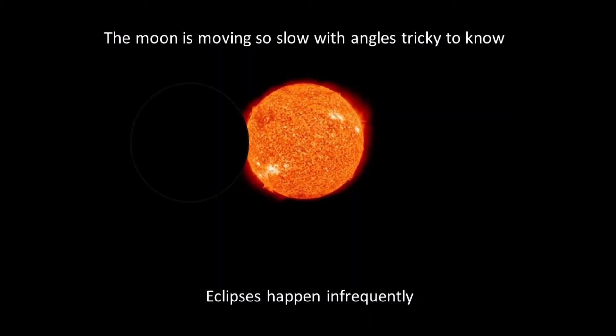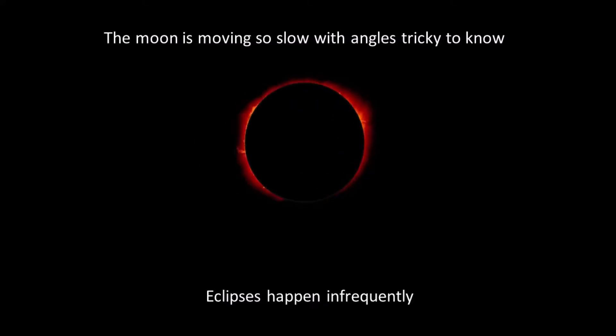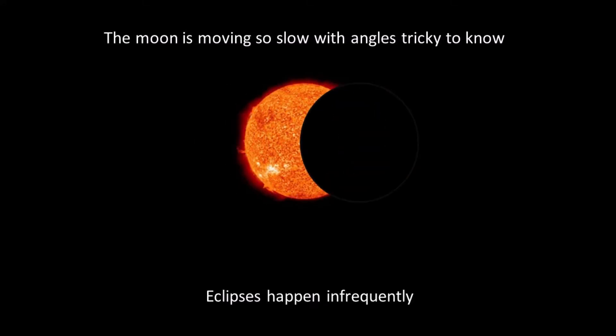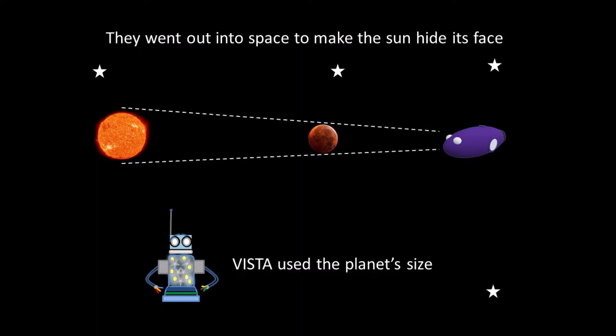The moon is moving so slow with angles tricky to know. Eclipses happen infrequently. On the earth or in space, you need the right time and place to see eclipses when they make a show. They went out into space to make the Sun hide its face.